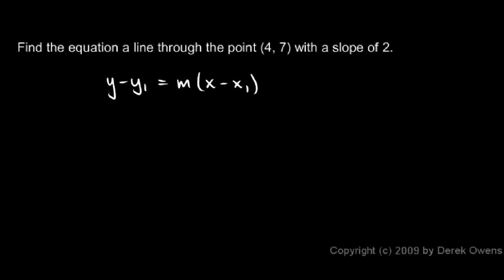And we put in the numbers that we know. We know m is our slope, that's 2. And then these values, 4 and 7, those are our values for x1 and y1. x1 is 4 and y1 is 7.